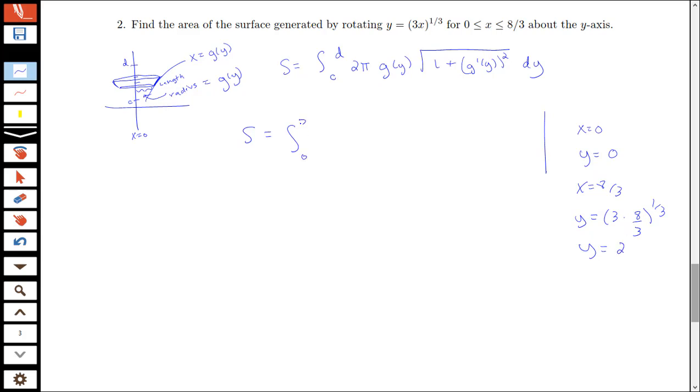So I'll be looking at bounds here from 0 to 2 for my y bounds. I'll have 2π times my function in terms of y. So notice that I'm going to have y³ is equal to 3x if I look at taking the third power of both sides. And then I'll have x is equal to y³ over 3.